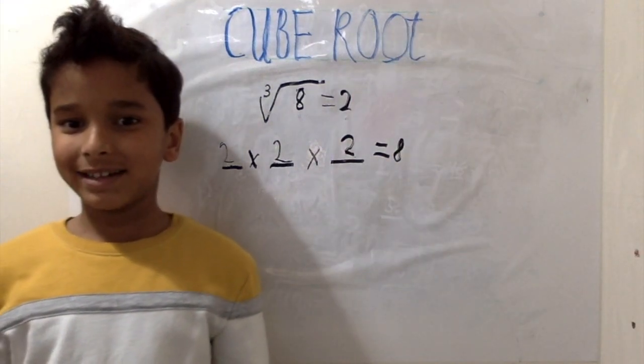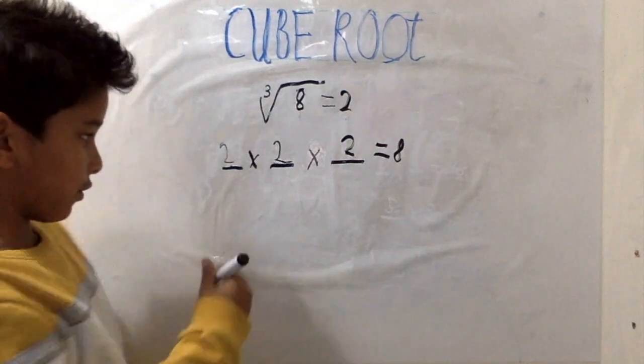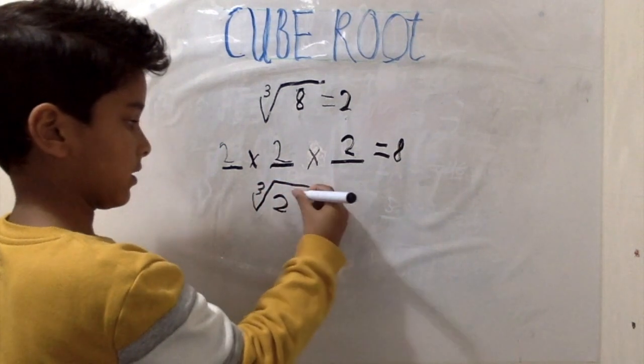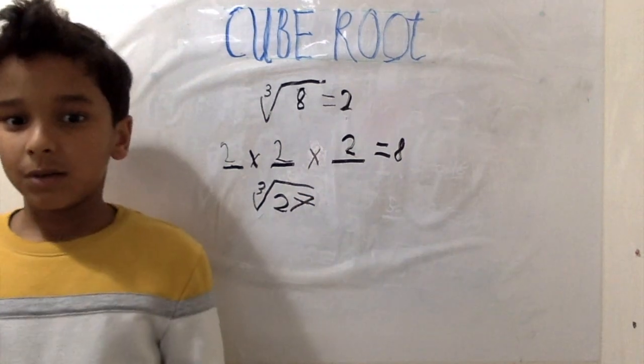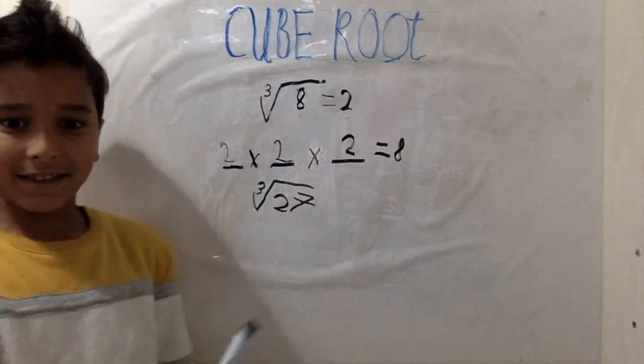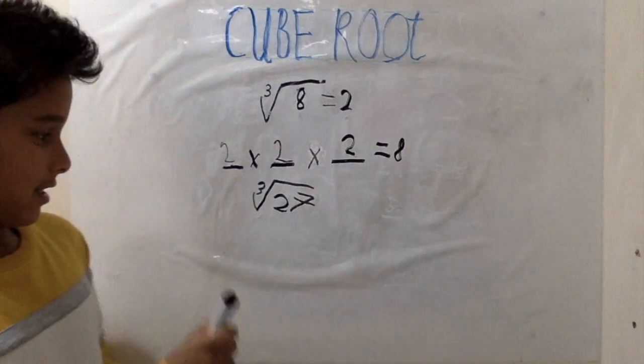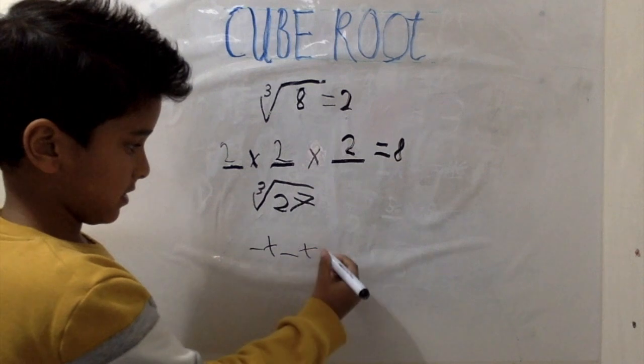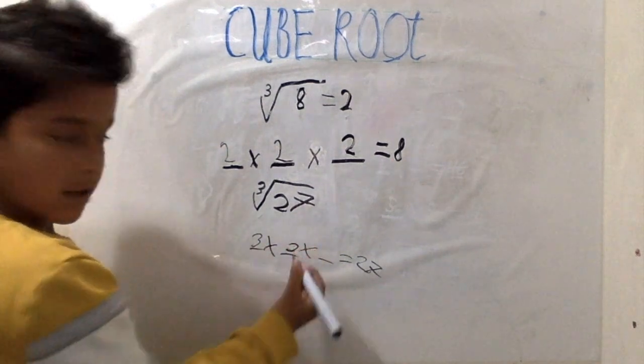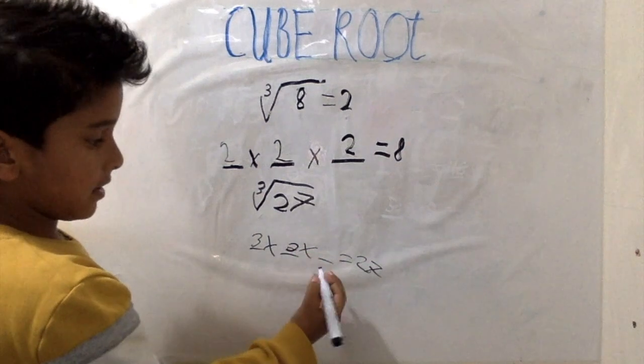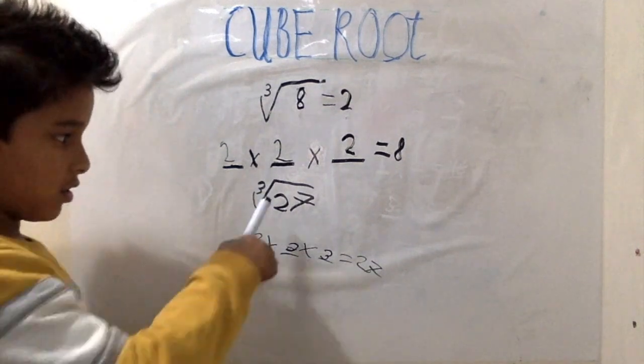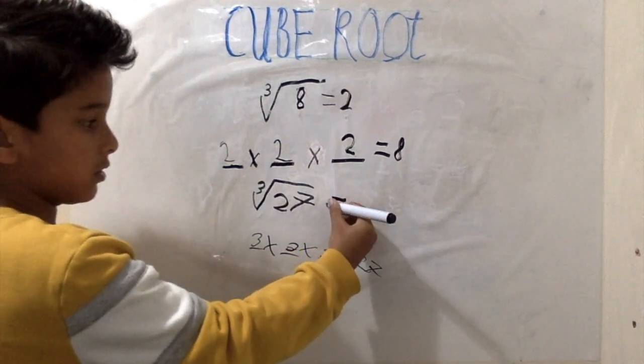Let's look at another example. Cube root of 27. What number multiplied by itself 3 times equals 27? The answer is 3. 3 times 3 equals 9, then 9 times 3 equals 27. So the cube root of 27 equals 3.